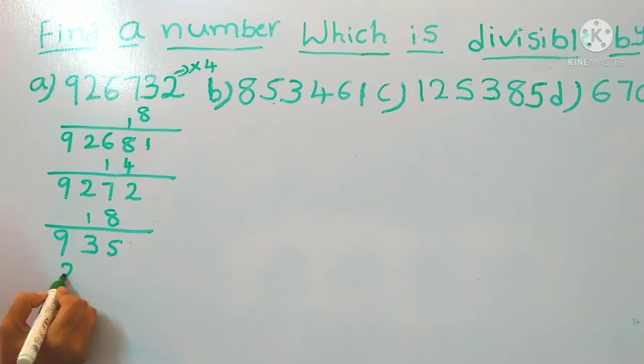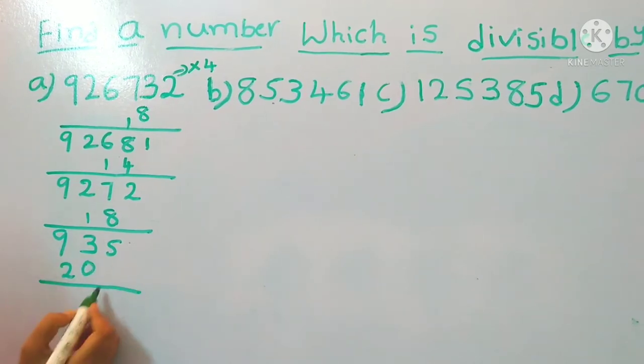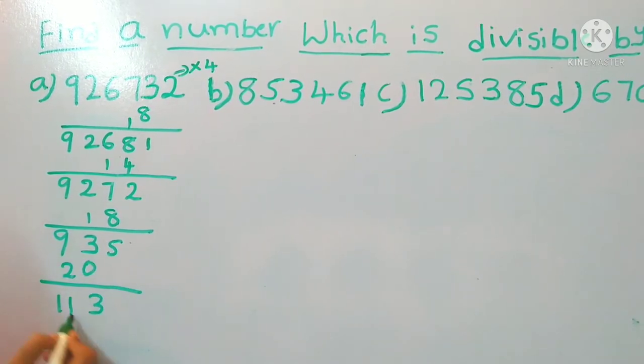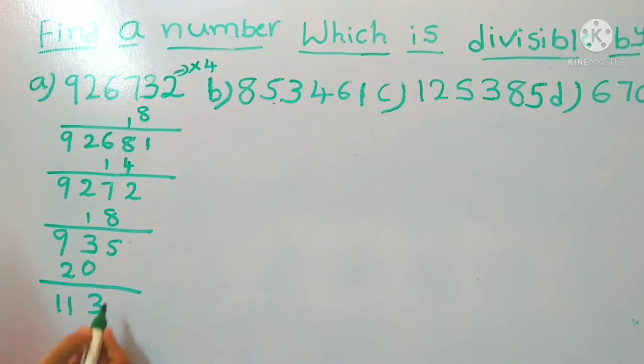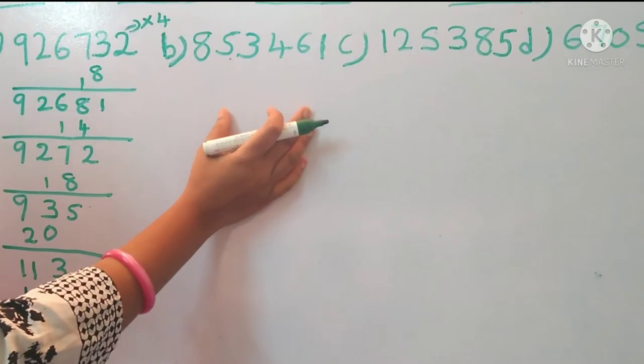5 for the 20, so 3, 11. So then again multiply the last digit with 4, 3 for the 12, so 30, so 3, 2, 23. So which is non-divisible by 13, so the whole number is non-divisible by 13. Let us take option B.